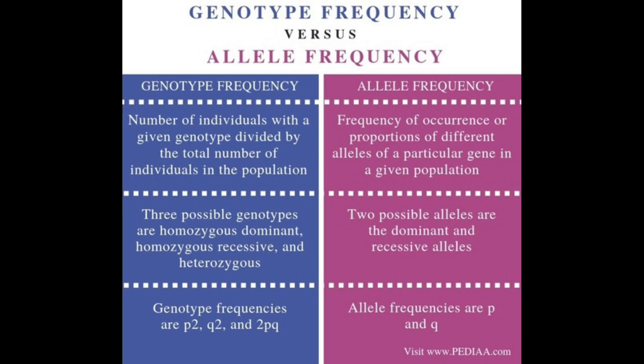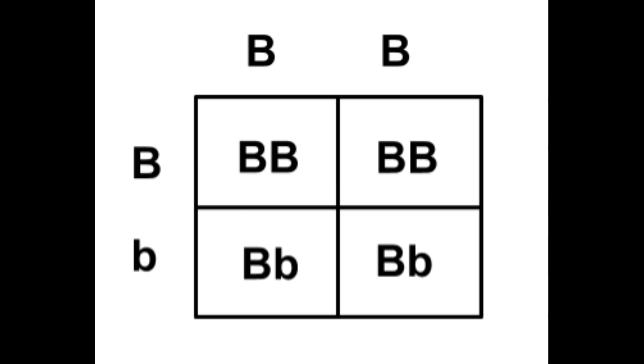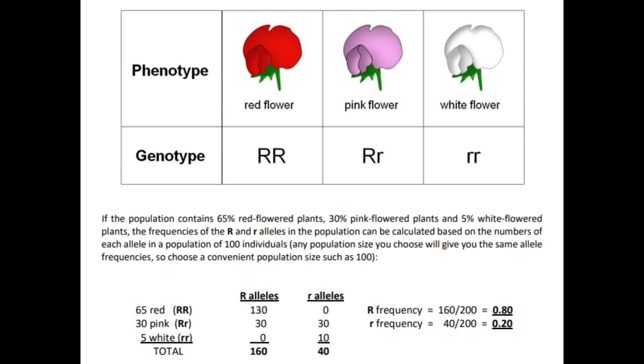Allele frequency, genotype frequency, and phenotype frequency are all interconnected because they all describe different aspects of how traits are distributed in a population. Allele frequency measures how common a specific allele is within a population and shows the genetic diversity at a particular gene. Genotype frequency refers to the distribution of different combinations of alleles — like big B little b, big B big B, or little b little b. Since genotypes are made up of alleles, allele frequency directly affects genotype frequency. And phenotype frequency is the expression of observable traits like eye color in a population, which is also determined by genotypes. Changes in genotype frequency affect phenotype frequency, depending on dominant or recessive alleles.